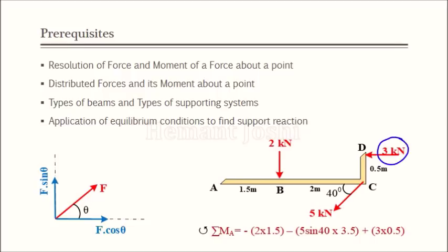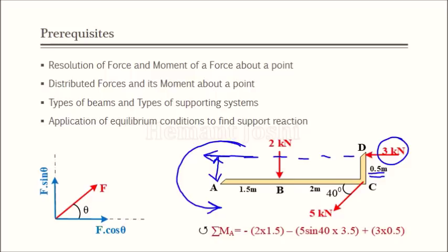The next force is 3 kN, which is horizontal. Whenever the force is horizontal, I need the vertical distance as the perpendicular distance, and that vertical distance is 0.5. Observe that the moment created is anticlockwise because the arrow of the force is leftward, so this will create an anticlockwise moment. The moment of that force is 3 × 0.5, and the answer is positive because it is anticlockwise.